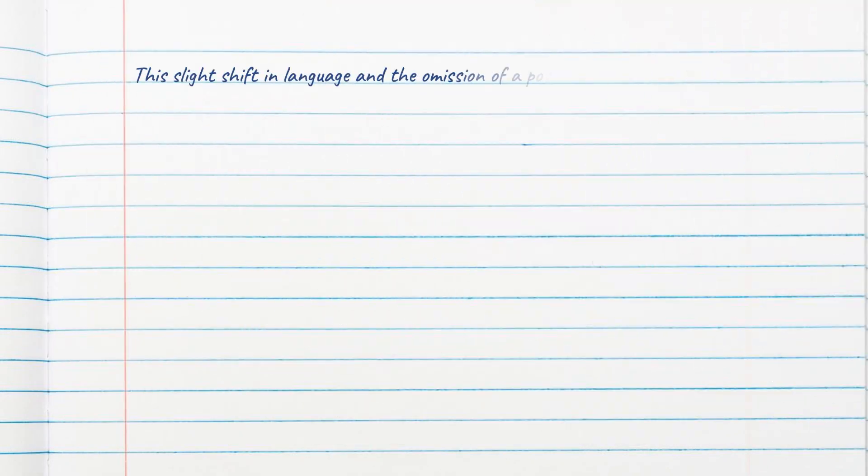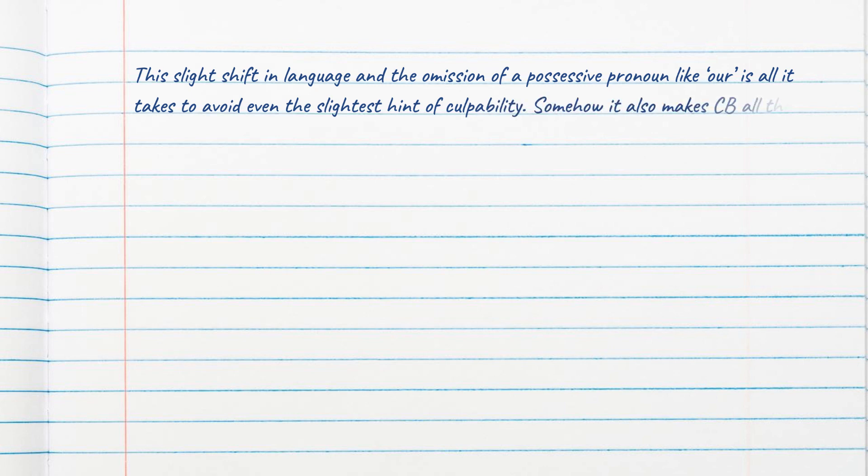This slight shift in language, and the omission of a possessive pronoun like our, is all it takes to avoid even the slightest hint of culpability. Somehow, it also makes CB all the more heroic, as if this disappointment somehow spurred them to take action that they were never required to take in the first place.